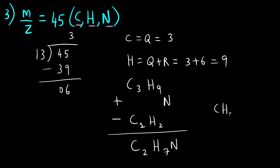This compound is ethylamine, also called aminoethane. So here we come to the end of this video. I hope you have understood how we can use the rule of 13 to find out the molecular formula using the m/z value.